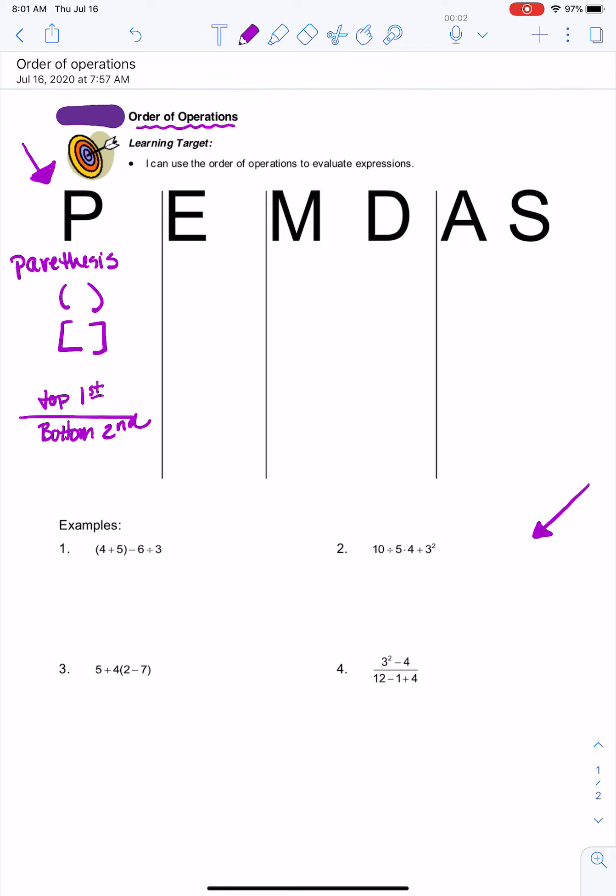The next thing you might see in an expression that you need to simplify would be exponents, and that's what the E stands for. Exponents can be a variety of things, but the most common that you'll see would be something like X squared or X to the second power, or X cubed is X to the third power, and so on.